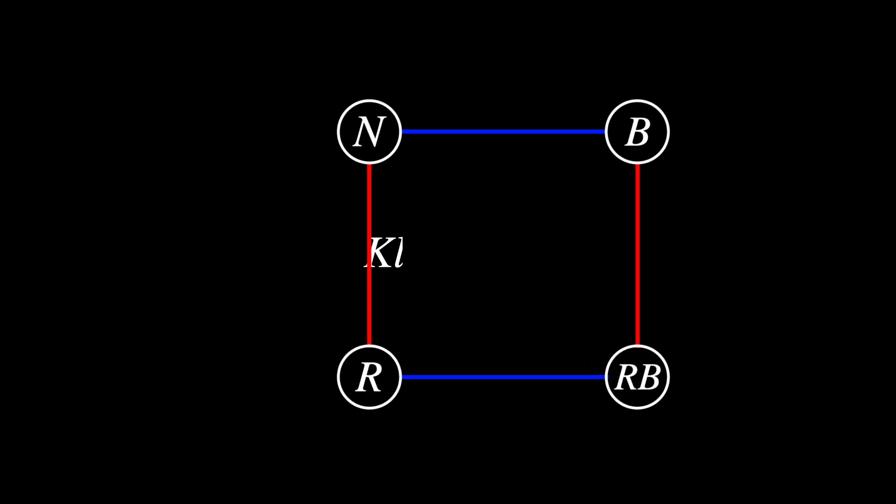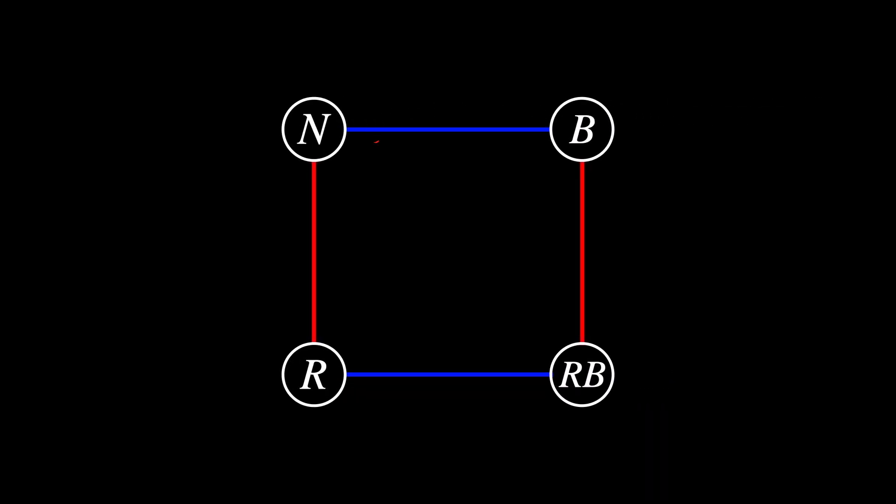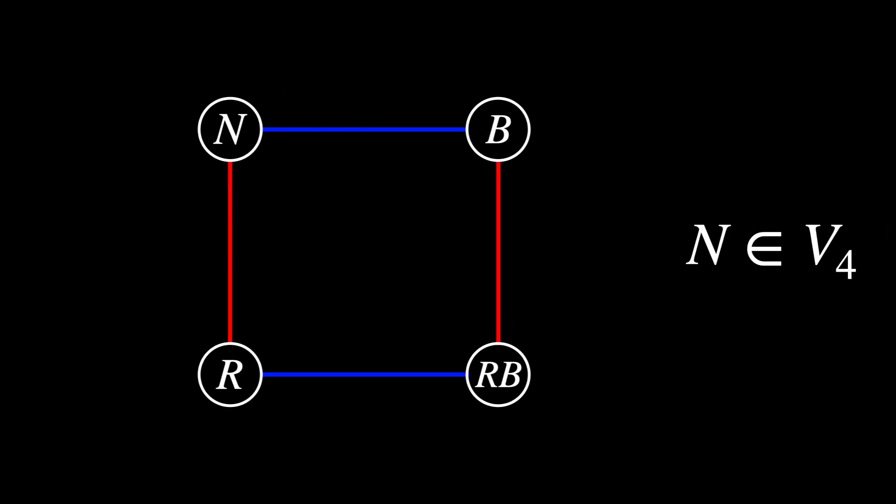More specifically, it is known as a Klein four group, V4. By the way, all of the nodes are its elements. So when we say N is an element of V4, we express it like that. N belongs to V4.